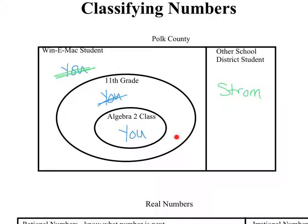Who can we put out here that isn't supposed to be in here? If you can think of an 11th grader that's not in Algebra 2 — I can't think of any, and from year to year this will change. But someone who may not be in Algebra 2, for whatever reason, would be out there — maybe they've already taken Algebra 2 and now they're taking a senior class. And anybody out here would be your 3rd grade students, 10th grade students, or kindergarteners — they're not in 11th grade and definitely not in Algebra 2.